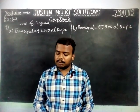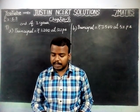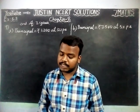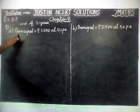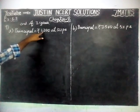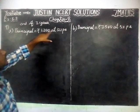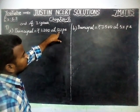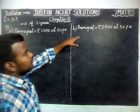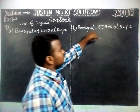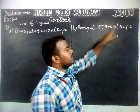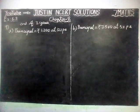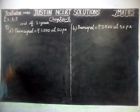We have to find the amount to be paid at the end of 3 years in each case. The first question: Principal is equal to 1200, Rate of Interest is equal to 12% per annum. The second question: Principal is equal to 7500 and Rate of Interest is equal to 5%. We are going to find it one by one.